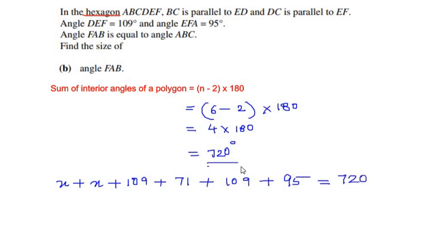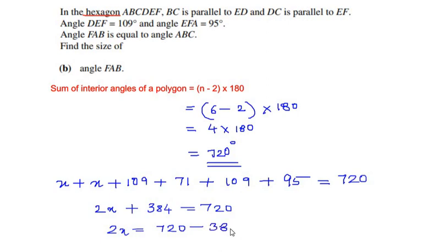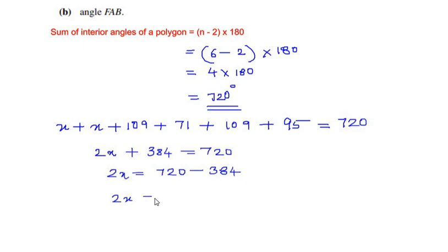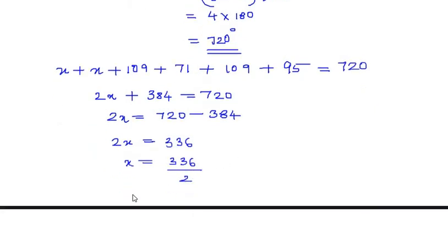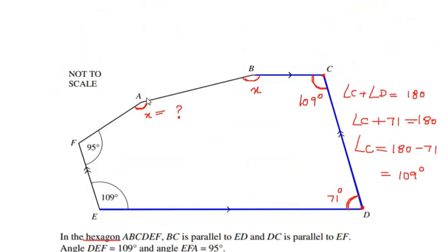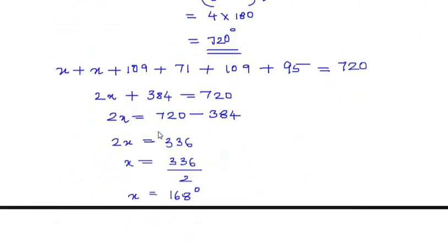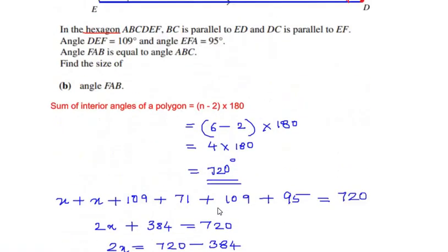So x plus x plus 109 plus 71 plus 109 plus 95 equals 720. That gives us 2x plus 384 equals 720, so 2x equals 720 minus 384, which is 336. Therefore x equals 336 divided by 2, which gives us 168 degrees. Since we took angle FAB as x, angle FAB equals 168 degrees.